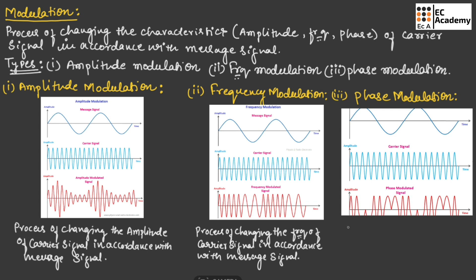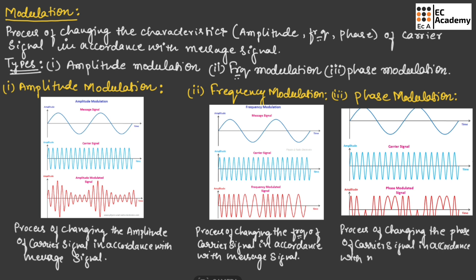Now let us define phase modulation. Phase modulation is a process of changing the phase of the carrier signal in accordance with the message signal. Here we are changing the phase of the carrier signal with respect to the message signal. As you can see in this diagram, at this point the phase of the carrier signal is changed, and again at this point the phase of the carrier signal is changed. This type of modulation is known as phase modulation.